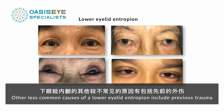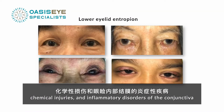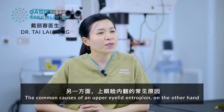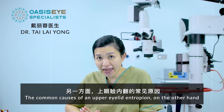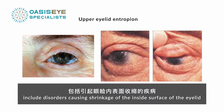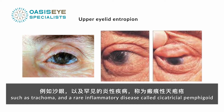Other less common causes include previous trauma, chemical injury, and inflammatory disorders of the conjunctiva on the inner aspect of the eyelid. The common causes of upper eyelid entropion, on the other hand, include disorders causing shrinkage of the inside surface of the eyelid, such as trachoma and a rare inflammatory disease called cicatricial pemphigoid.